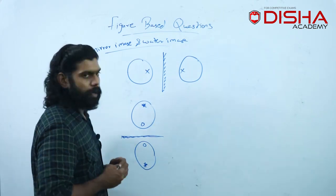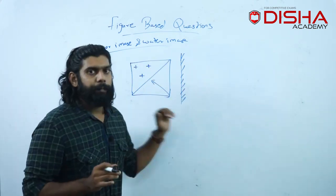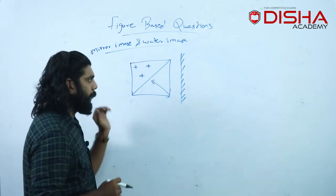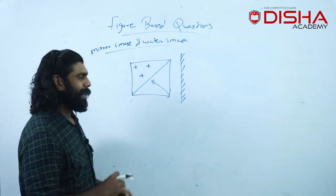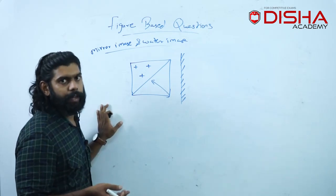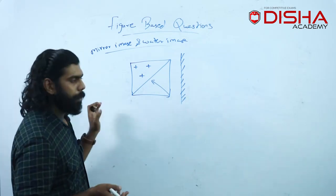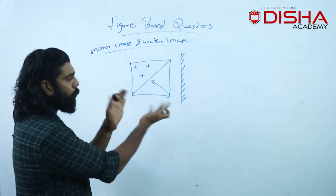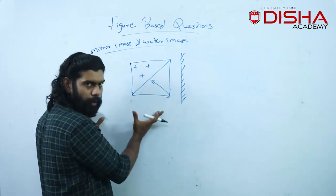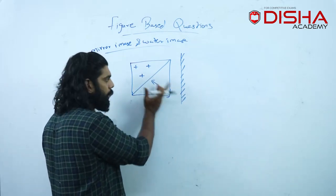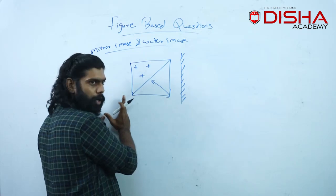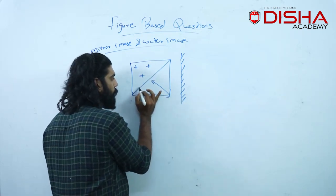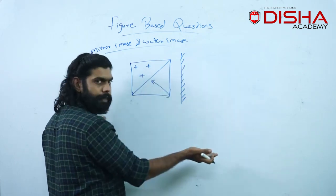Let's take an example of a mirror image. Let's take a mirror image of this figure. If you have options, you can do it. You can do it with elimination. If you have a mirror image, you can do it in the opposite direction — left or right. If you try any of this figure, you can do it. Let's take a mirror of this figure.